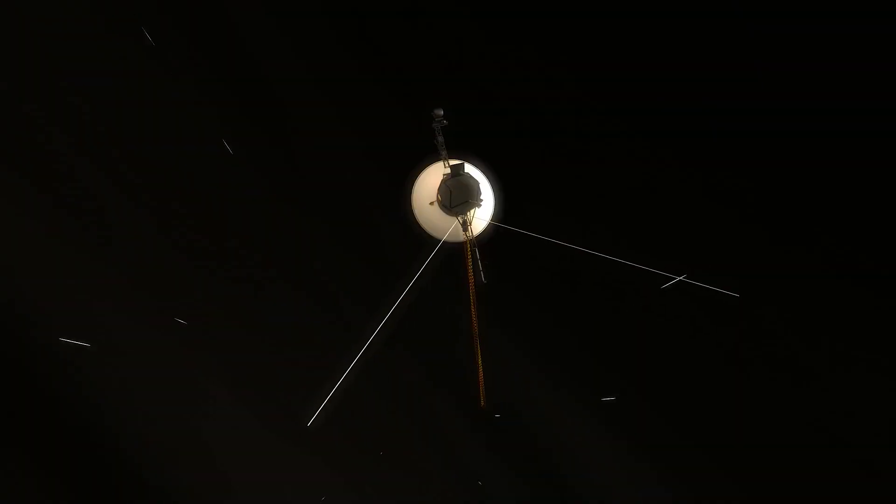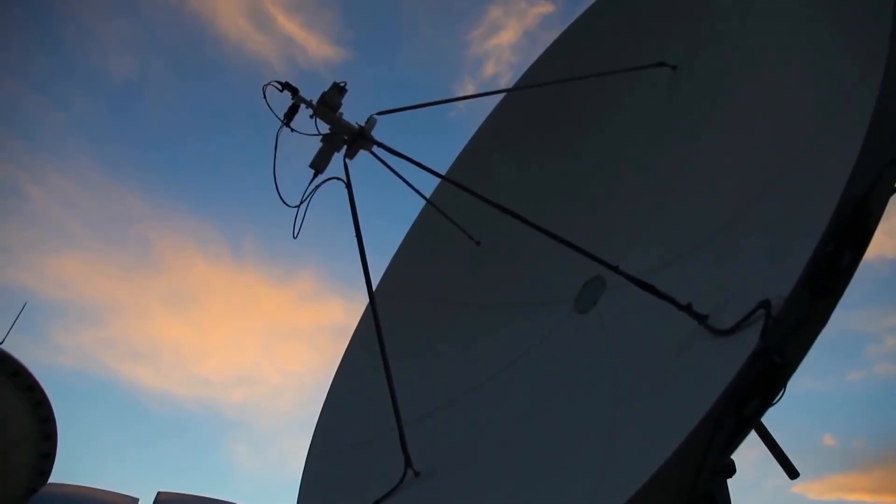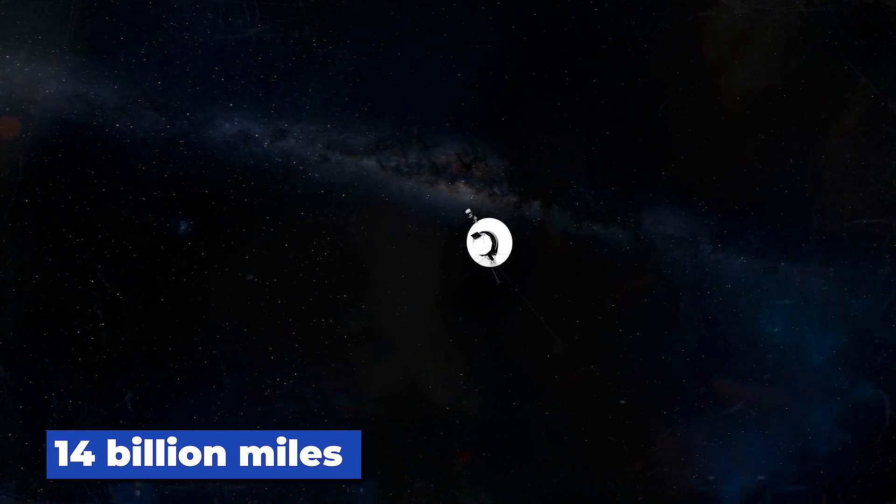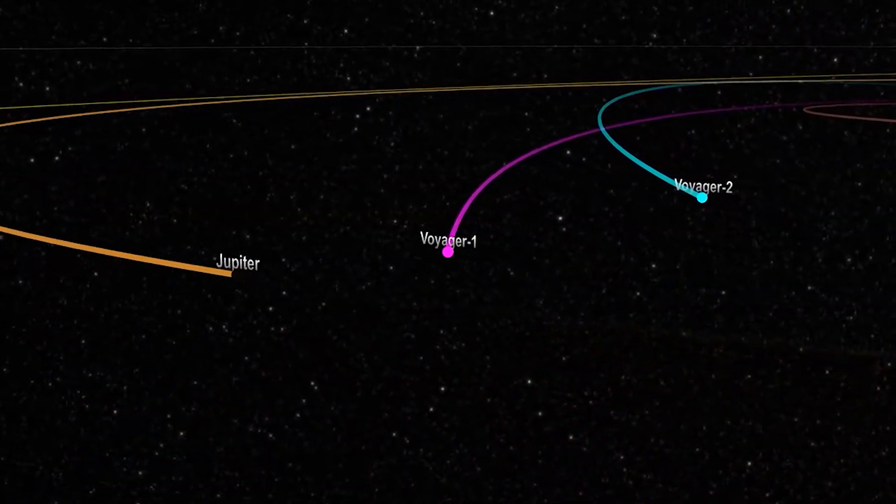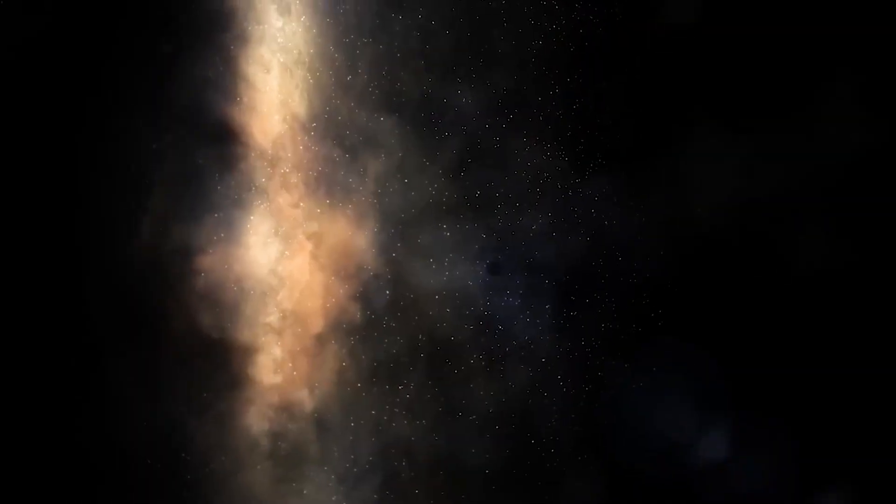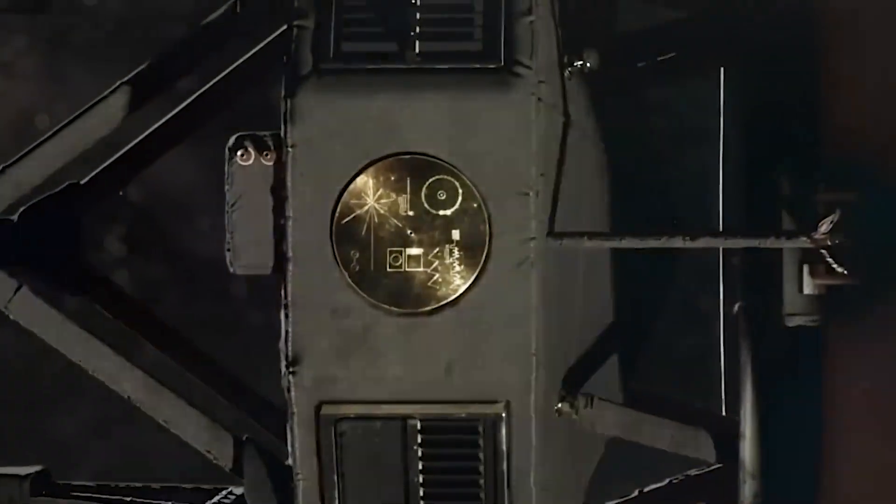Perhaps the most incredible aspect of the Voyager mission is that the spacecraft is still transmitting data back to Earth today, despite being over 14 billion miles away. The Voyager spacecraft have left our solar system and entered interstellar space, and they continue to provide us with valuable data about the environment outside our own sun's influence.